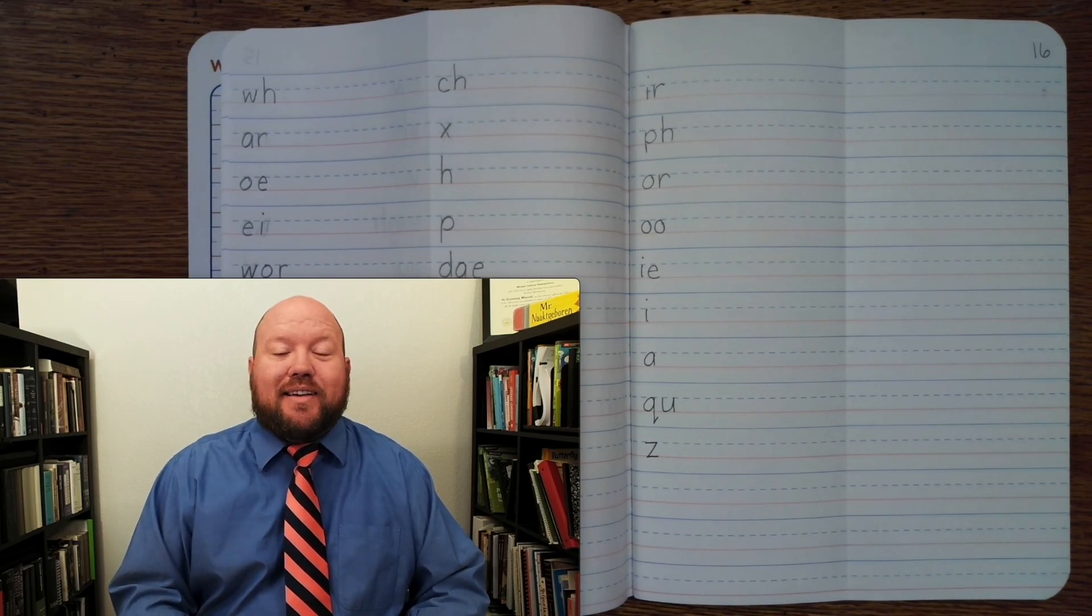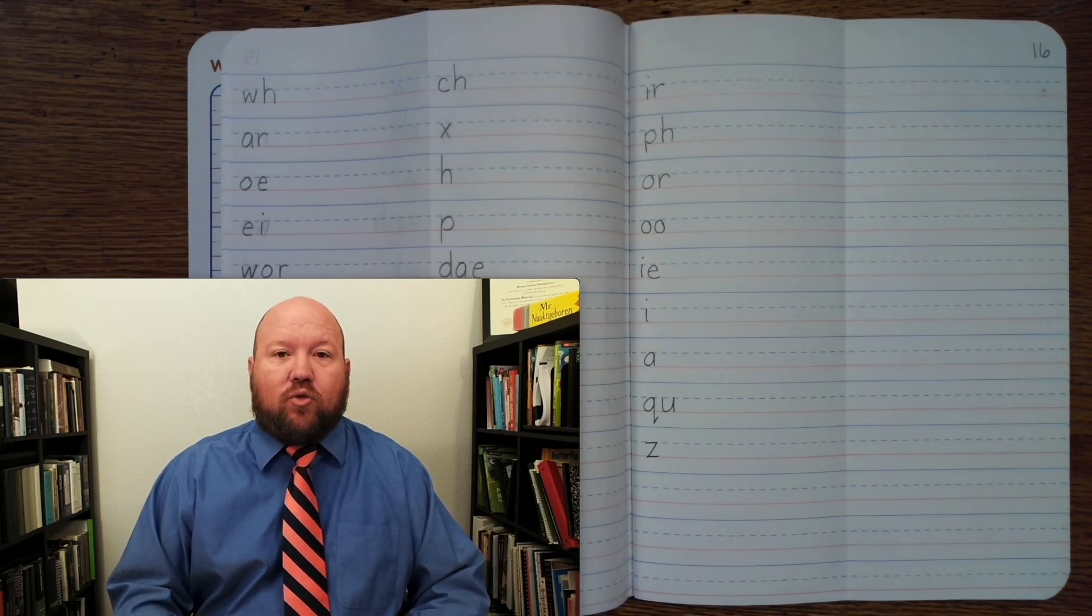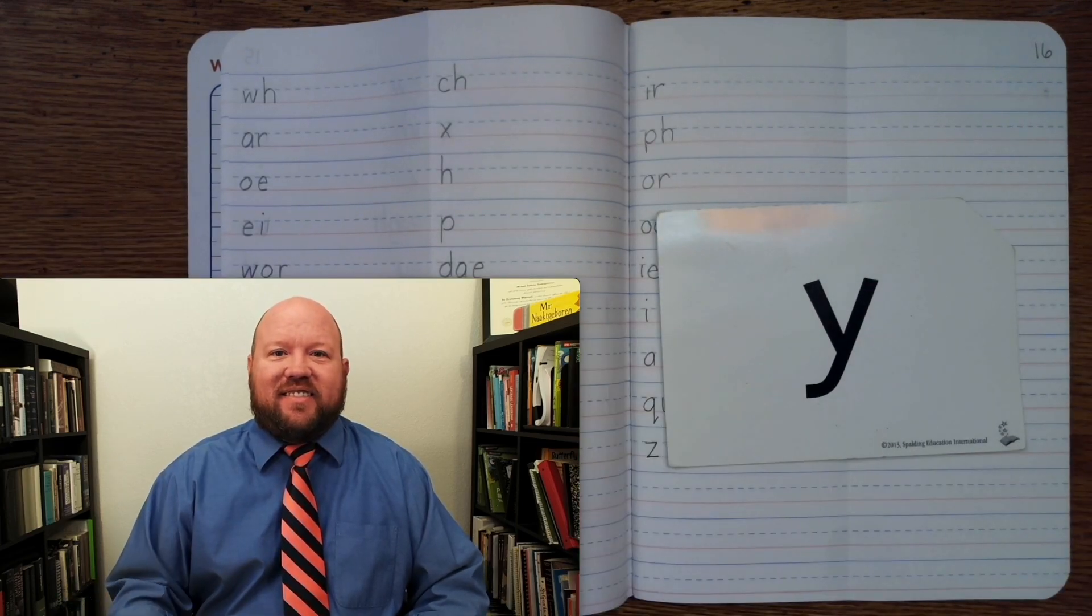Now we'll do it again. This time you'll say the sound, followed by the cue if there is one. Again, try to say it before me. U, J, A, I.